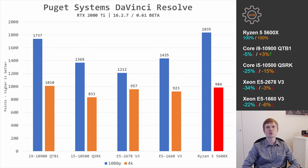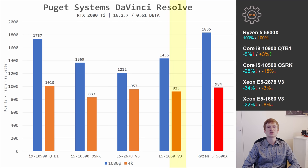In the Puget Systems DaVinci Resolve benchmark, DaVinci generally relies on a powerful GPU but the CPU still plays an important role. The Core i9-10900 loses 5% in 1080p but wins 3% in 4K compared to Ryzen 5 5600X. The Core i5-10500 QSRK loses 25% and 15%. The Xeon E5-2678v3 loses 34% in 1080p but only 3% in 4K — demonstrating that for 4K editing, a strong GPU matters most and the Xeon E5-2678v3 is sufficient.